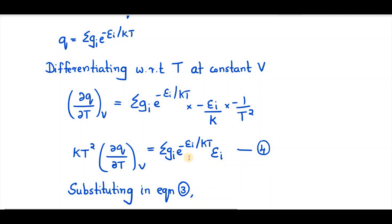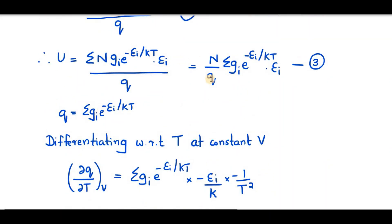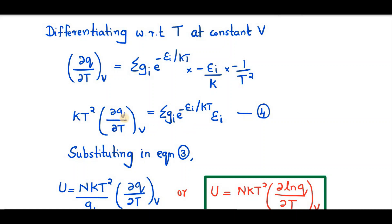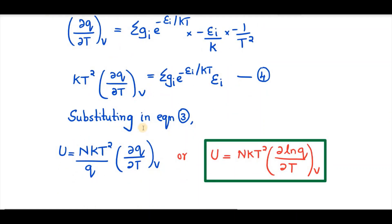Now, if we substitute equation 4 into equation 3 — that is, U equals N by q, summation gᵢ·e raised to minus εᵢ by kT into εᵢ — we replace that summation term with kT² times ∂q/∂T at constant V. We get U equals NkT² by q, times ∂q/∂T at constant V. Or equivalently, U equals NkT² times ∂ ln q/∂T at constant V. Thus, the internal energy of a system can be represented in terms of partition function as U equals NkT²·(∂ ln q/∂T) at constant V.